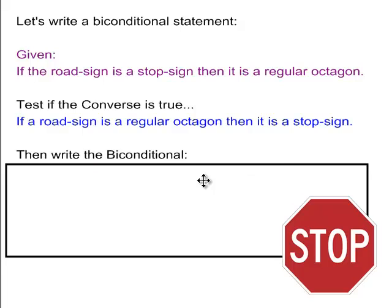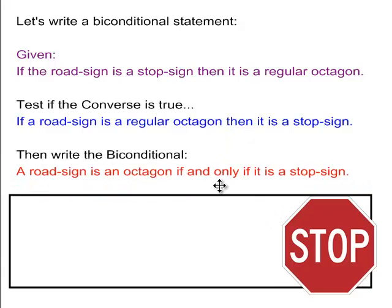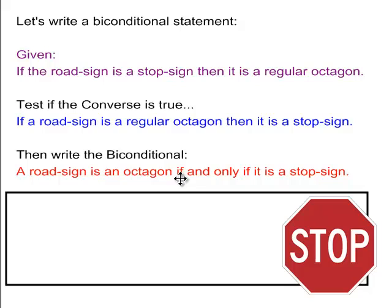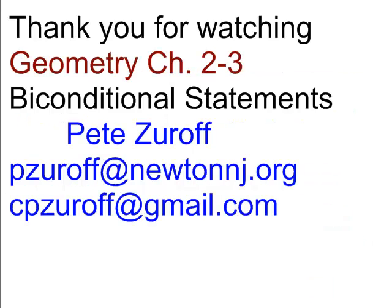So then you can write it as a biconditional. All you're going to do is you're stripping out the if, and where the then was, you throw if and only if. So there you go. A road sign is an octagon if and only if it is a stop sign. Works for me. And that's it. Thanks for watching this short lesson.